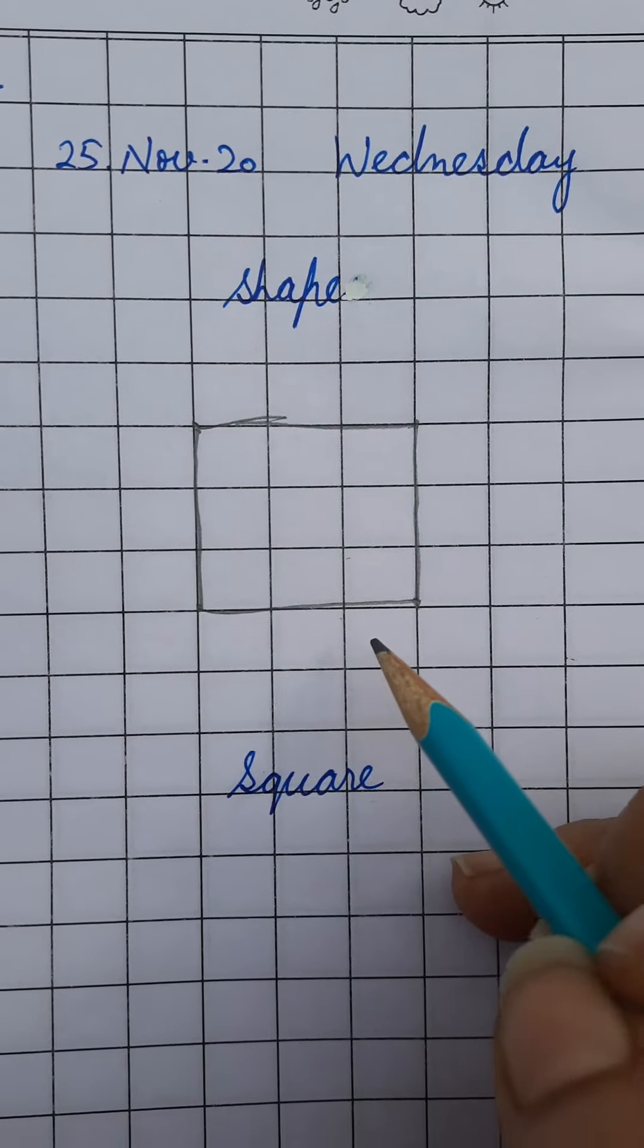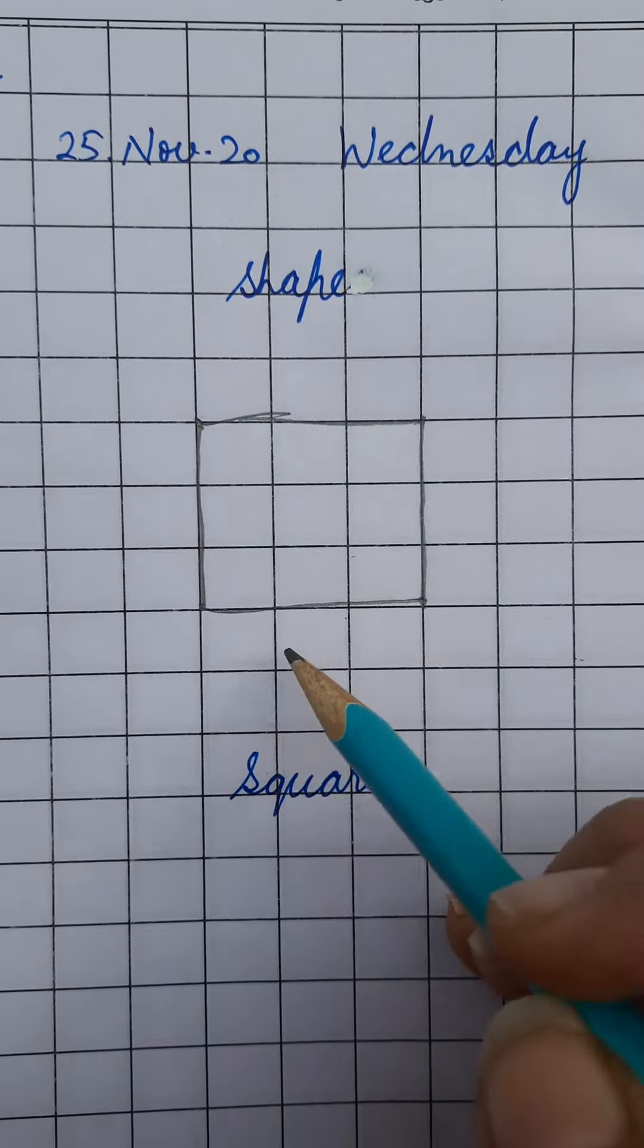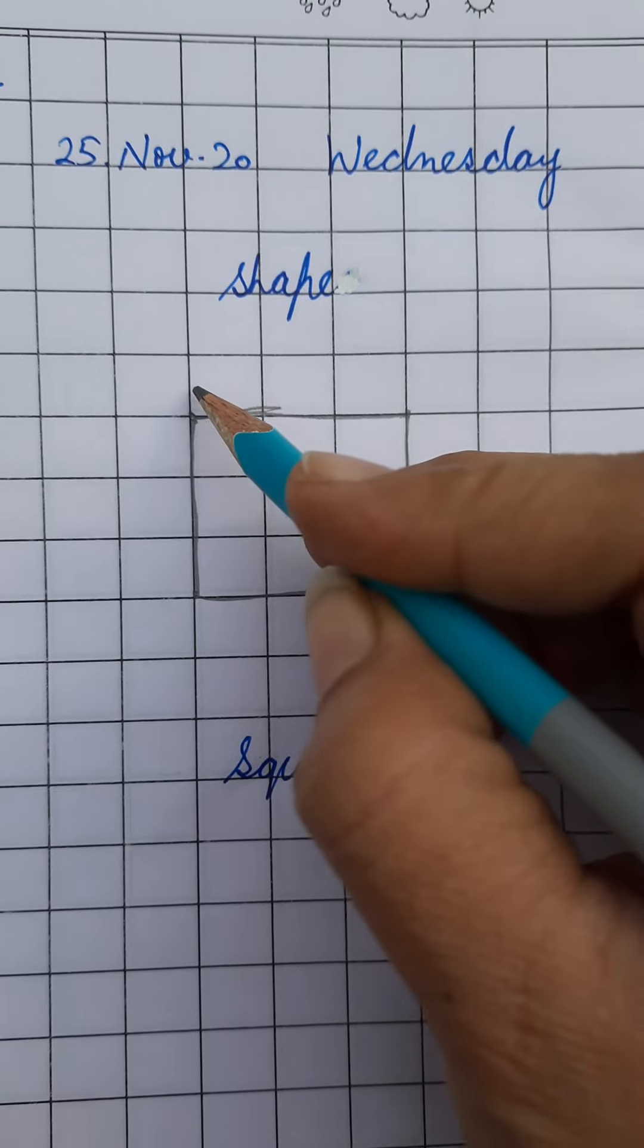Which shape is this? Square. Remember students, all the sides of a square are always equal.